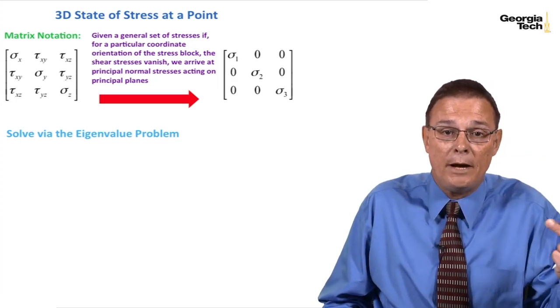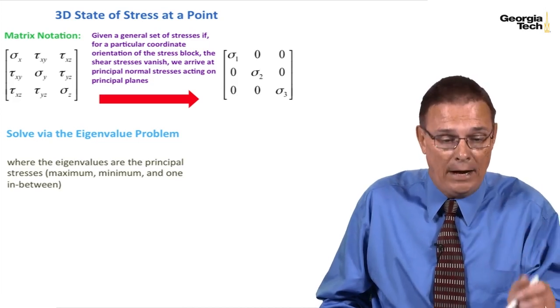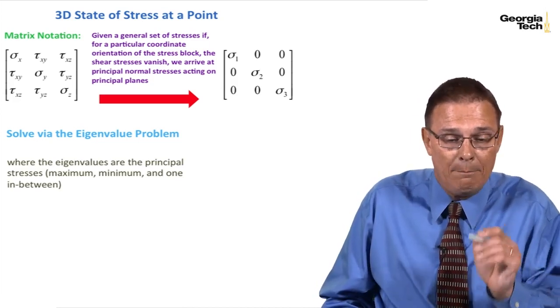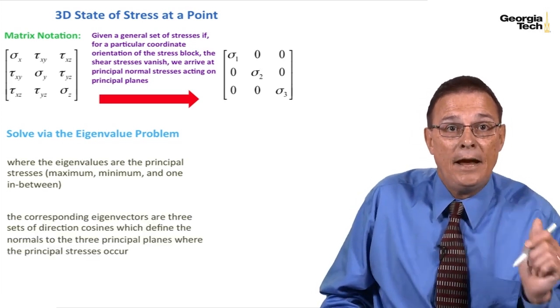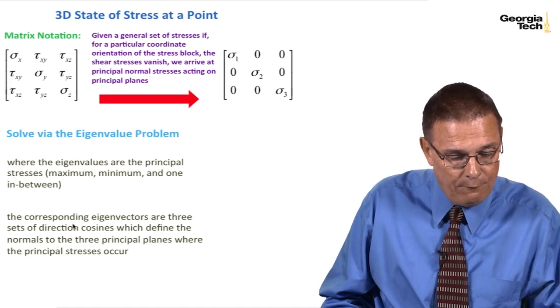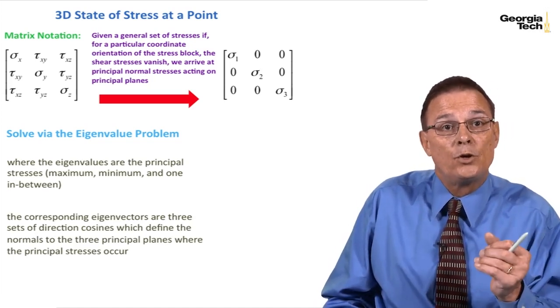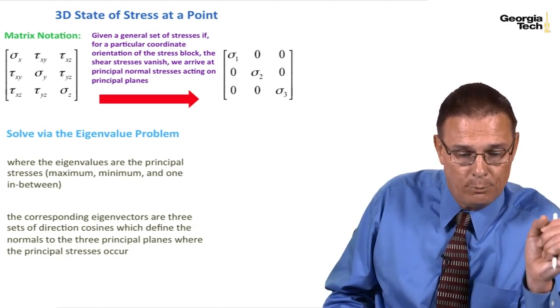Again, go back to my 3D course to see what the eigenvalue problem is all about. And the eigenvalues are the principal stresses, and we get a minimum, a maximum, and one in between. And those are on my diagonal. And the corresponding eigenvectors are the three sets of direction cosines which define the normals to the three principal planes where these principal stresses occur.